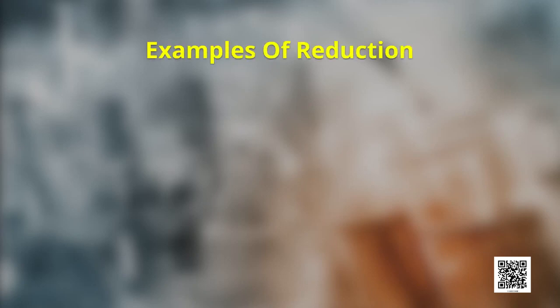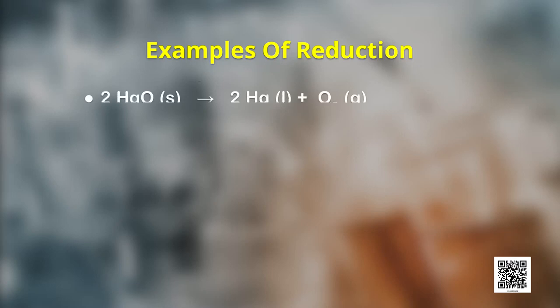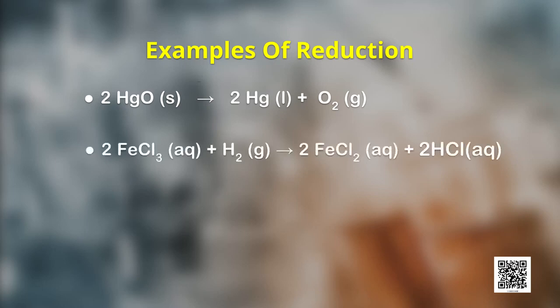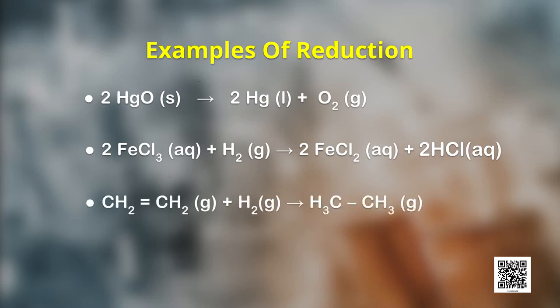Now let us understand what is reduction. In the beginning, reduction was considered as removal of oxygen from a compound. However, the term reduction has been broadened these days to include removal of oxygen or electronegative element from a substance, or addition of hydrogen or electropositive element to a substance. There are a few examples of reduction process shown here. In the first example, removal of oxygen from mercuric oxide takes place. In the second example, removal of electronegative element chlorine happens when ferric chloride changes to ferrous chloride. In the third example, ethene gets converted by addition of hydrogen.